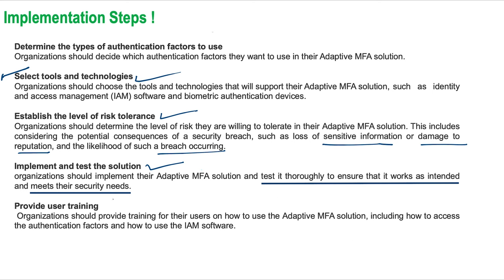The next step is to provide user training. Organizations should train their users on how to use the adaptive MFA solution, including how to access the authentication factors and how to use the IAM software. This helps ensure that users are comfortable using the solution and understand the importance of using multiple forms of authentication. In summary, implementing adaptive MFA involves determining authentication factors, selecting the right tools and technologies, establishing risk tolerance, implementing and testing the solution thoroughly, and providing user training to ensure a successful rollout.